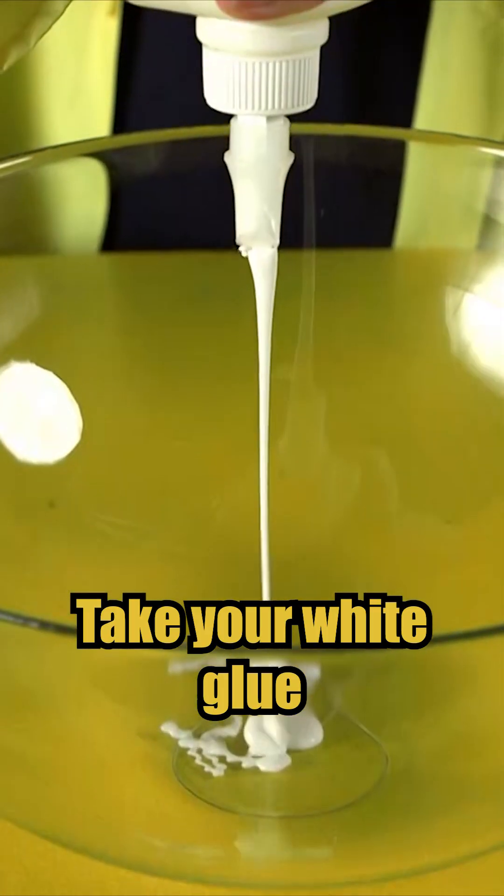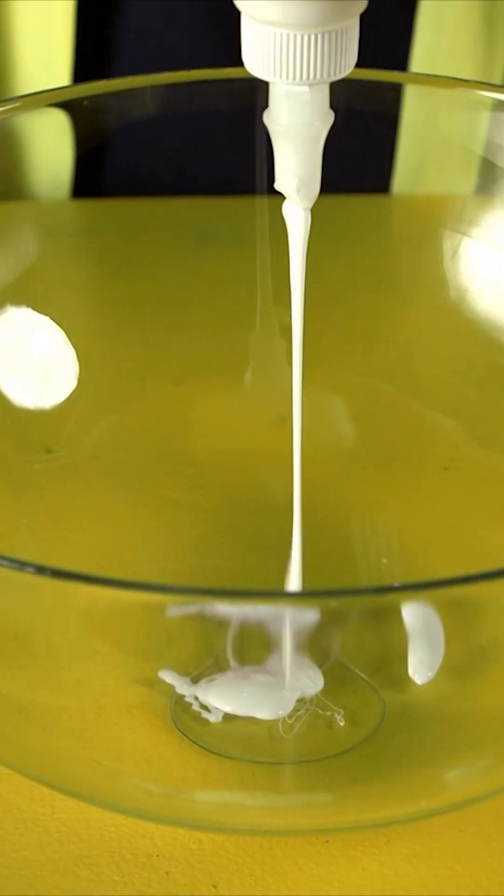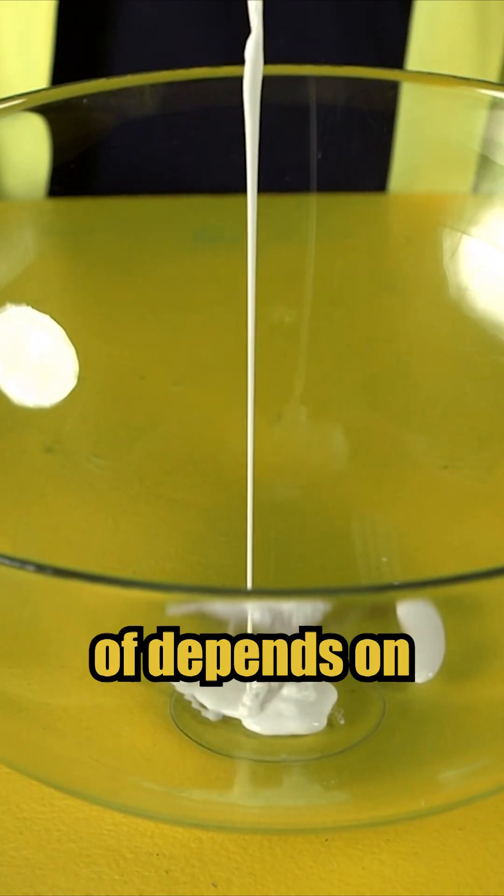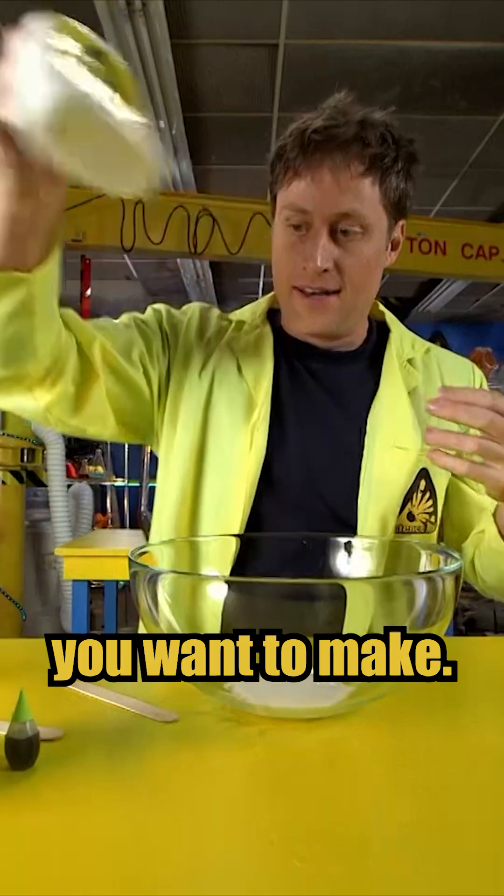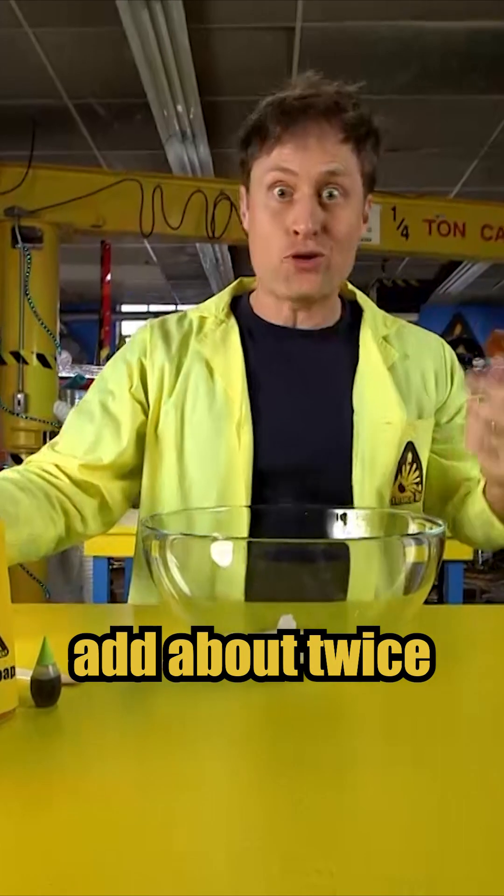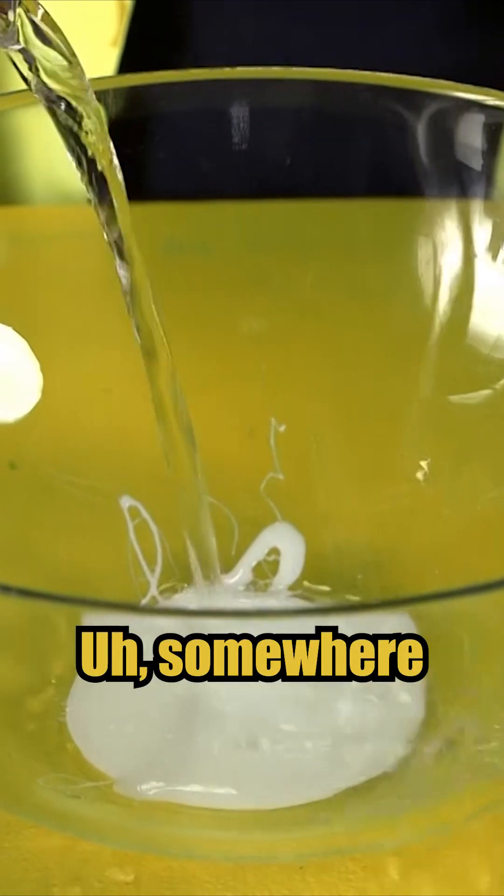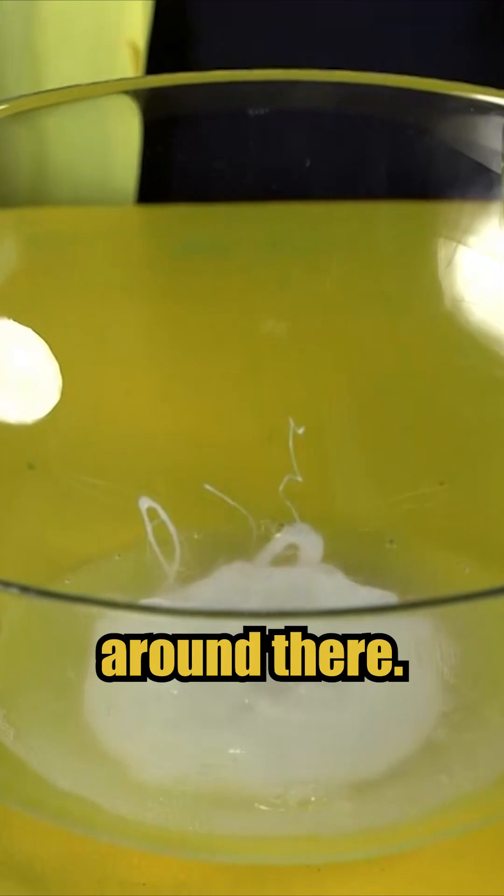To make slime, take your white glue and pour in an amount. It really depends on how much slime you want to make. Now, you want to add about twice as much water as that. Somewhere around there.